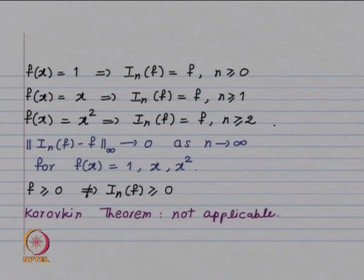Recall the Korovkin theorem: if you have a sequence of linear, positive maps such that there is convergence for the three functions 1, x, and x², then there is convergence for all continuous functions. In fact, when we wanted to show that Bernstein polynomials converge to f in the infinity norm, it is the Korovkin theorem which we used. Now, our new map Iₙ is linear and converges for the three functions 1, x, x², but it is not going to be positive.